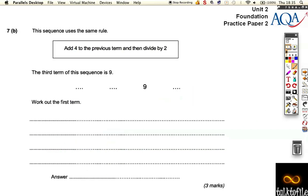Let's look at part B. Part B says the sequence uses the same rule, add 4, divide by 2, and the third term in the sequence is 9. So you can either guess the number that works for all of these, or you can do the inverse.